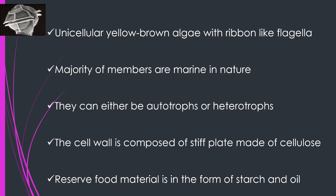These are unicellular brown or yellowish-brown algae with ribbon-like flagella. The majority of the members are marine in nature. They can either be autotrophs or heterotrophs. Autotrophs means they can manufacture their own food, and heterotrophs means they depend on some other organisms for food supply.